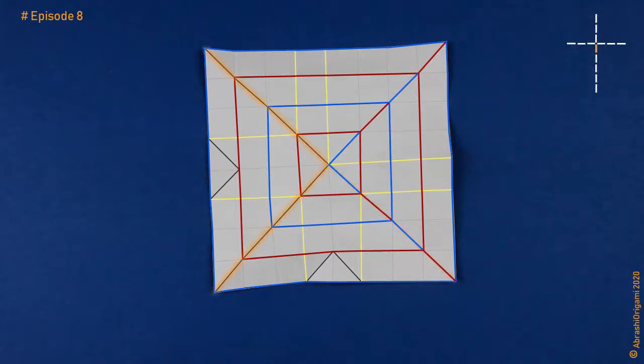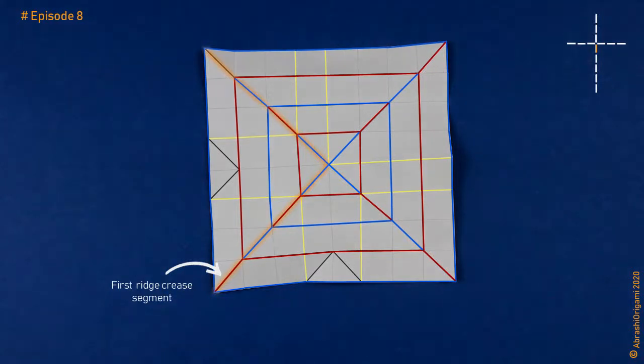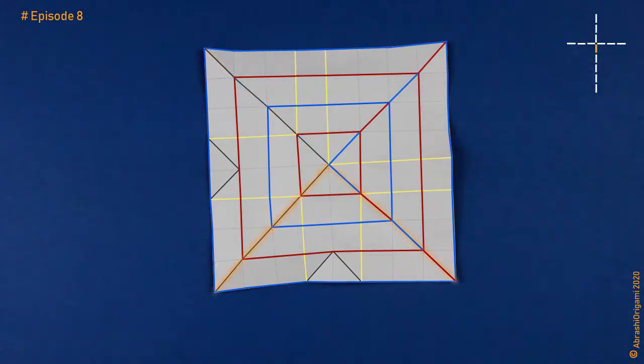Now, let's do the same with the second ridge crease. Just define the orientation of one segment properly and the rest should be easy. As you can see, it's really easy. But I'd like to show you an additional possibility. What if we decided to regard this orange line as a continuous ridge crease? Well, this'd be fine too. Our ridge crease has just bounced into the opposite direction. That's all.